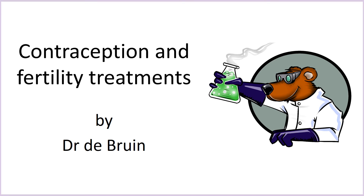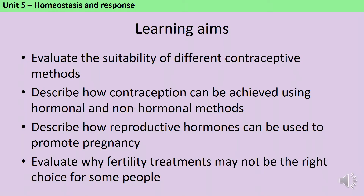This is a revision video looking at the GCSE biology topics of contraception and fertility treatments, which come up in the homeostasis and response unit of AQA GCSE biology and combined science. By the end of this video you should be able to evaluate the suitability of different contraceptive methods, describe how contraception can be achieved using both hormonal and non-hormonal methods, describe how reproductive hormones can be used to promote pregnancy, and evaluate why fertility treatments may not be the right choice for some people.